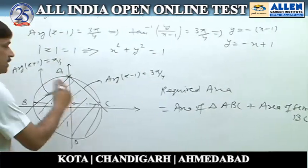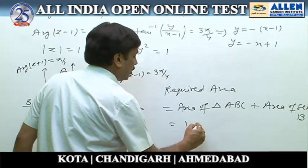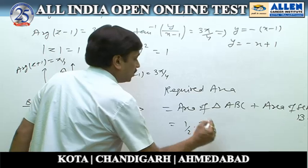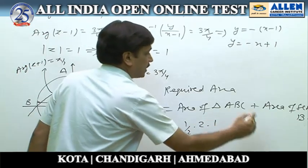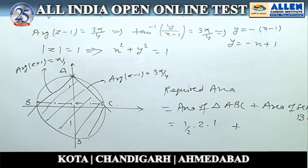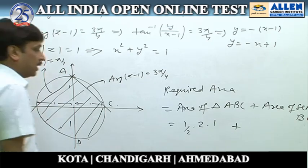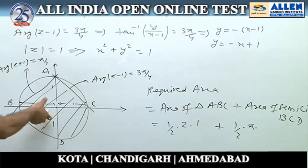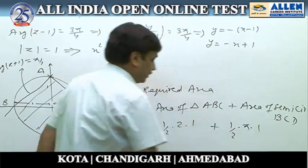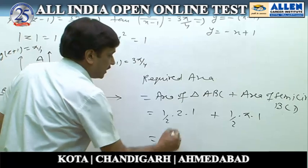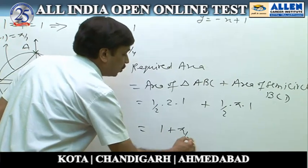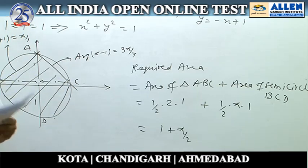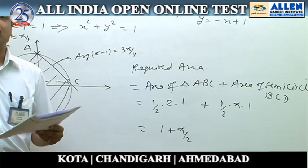The area of triangle ABC is half × base × height = half × (1+1) × 1 = 1. The area of the semicircle BCD is half × π × r² = half × π × 1² = π/2. So the required area is 1 + π/2. According to the given options, option number 4 is correct: the area bounded by these curves is 1 + π/2.